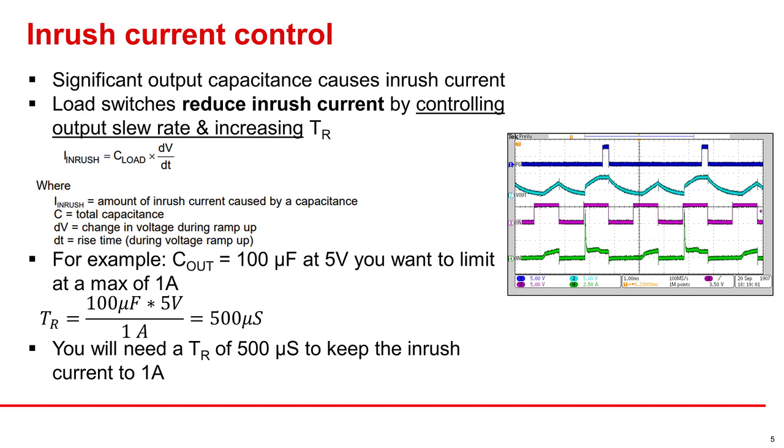Inrush current is caused by having output capacitance that requires charging when the power rail first turns on. This can spike to a significant amount of current, but can be controlled by limiting your rise time. Load switches can reduce inrush current by controlling the slew rate of their output.